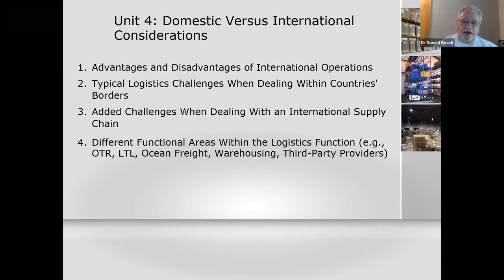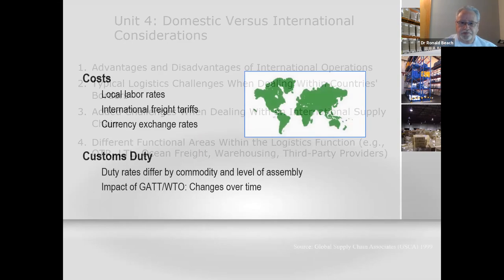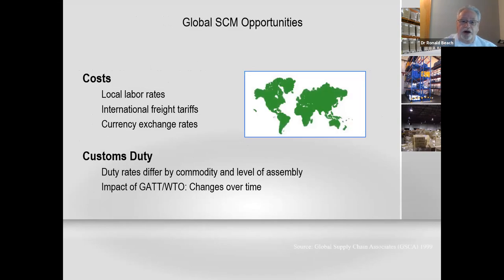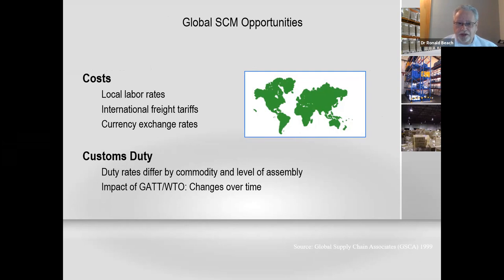Let's go back and talk about some of the main issues you have to contend with in international operations: labor costs, international freight tariffs, taxation, currency exchange rates, and customs. Remember, not only does it differ by every country and every border you cross, but they also differ by commodities and different levels of assembly. And the general accounting rules change over time.